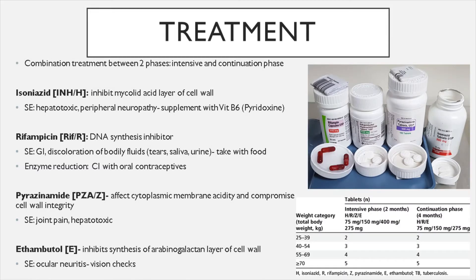When it comes to TB treatment, there are different phases: the intensive phase and the continuation phase. The intensive phase is usually two months, and the continuation phase is four months, making a total of six months on treatment. The most basic TB regimen is a combination of isoniazid, rifampicin, pyrazinamide, and ethambutol — called a fixed-dose tablet where all four medications are in one tablet, for adherence purposes.